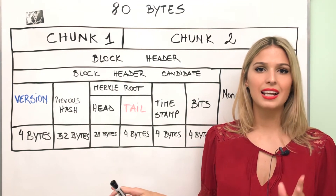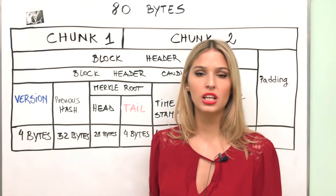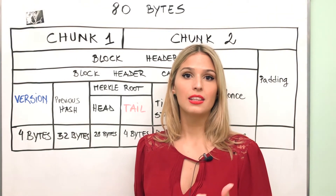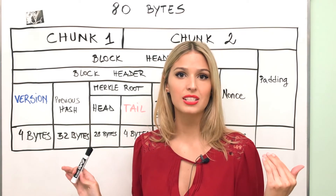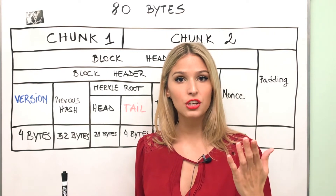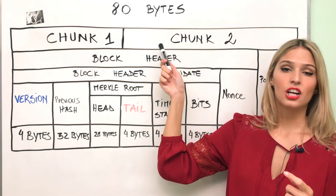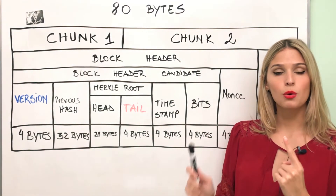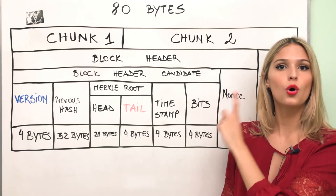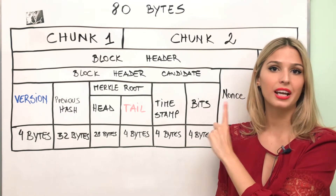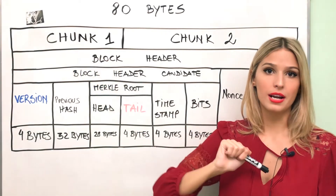What I want you to understand is how we achieve saving energy in the process of mining. In the process of calculating the SHA-256 algorithm, we're going to save energy by calculating chunk 2 once — we fix it and use it over and over again — and then our main focus is going to be on chunk 1.